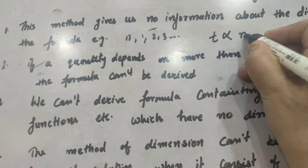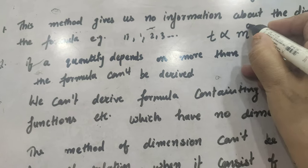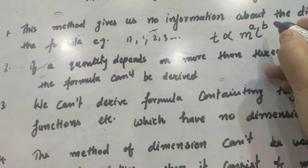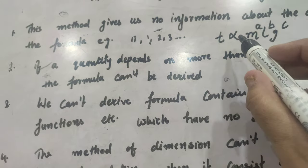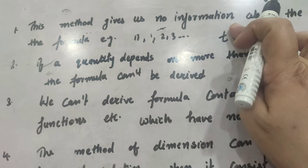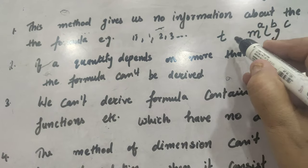t is directly proportional to the factors m raised to power a, l raised to power b, and g raised to power c. And after removing this proportionality constant from here, what we get is k.